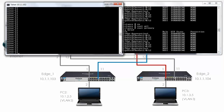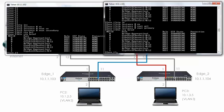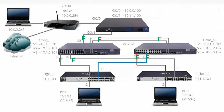On Core 2: 'stp instance 0 root secondary'. 'display stp brief' — now on both switches all ports are forwarding. The roles are either designated or root, so for all instances all ports are forwarding on both core switches. Previously this port was blocking, but now it's forwarding. All ports are forwarding on both core switches.